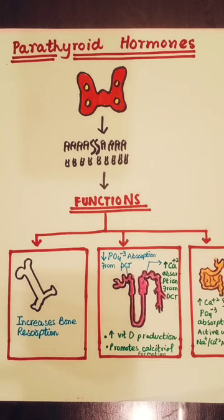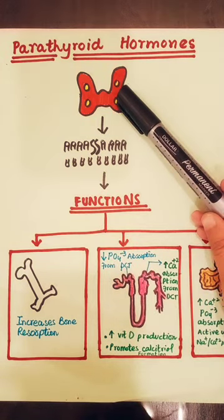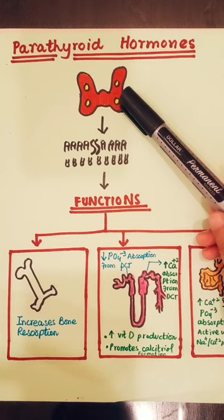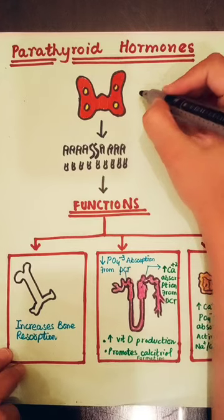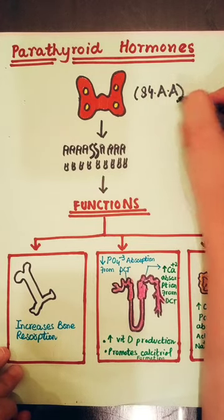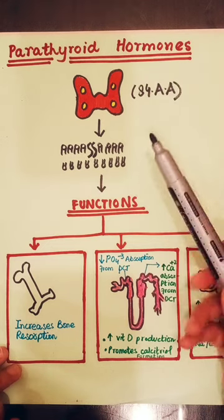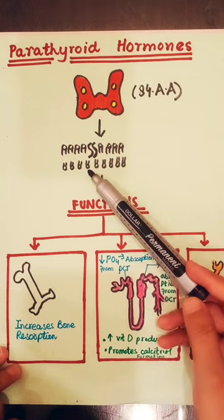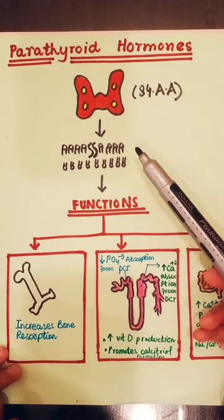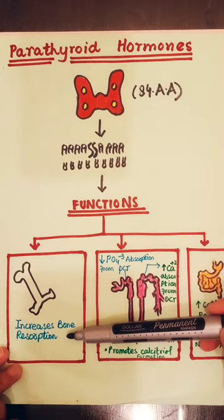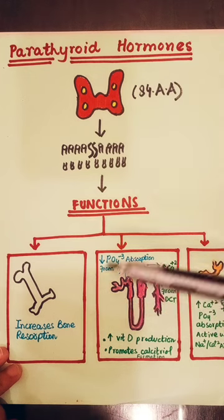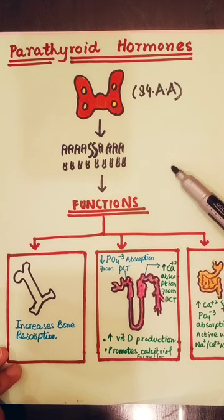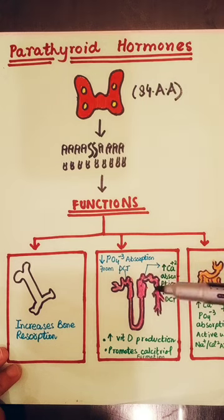Parathyroid hormone is very important. It is released from the parathyroid glands situated on the posterior side of the thyroid gland. It is a peptide hormone made of 84 amino acids. It acts on G-protein receptors, binding in the cytoplasm. It is secreted from the parathyroid gland and has a half-life in minutes. Its function in bone is to increase bone resorption. When there is hyperparathyroidism, the bone becomes weak because parathyroid hormone raises calcium levels.